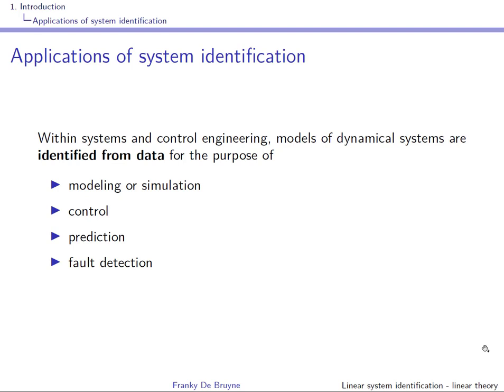There can be an advantage in using system identification because the identified model can sometimes capture aspects that are difficult to capture using first principle modeling. A third application is to use the identified model to construct a predictor, using past inputs and past outputs to predict outputs at present time or with some horizon into the future. The last application is fault detection.